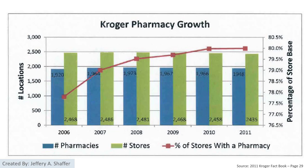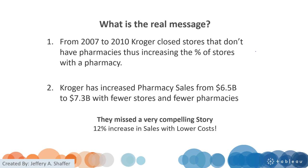So going back to our chart, we know that both stores and pharmacies are declining — but why is the percentage of pharmacies increasing? The answer is that they are closing stores without pharmacies. Kroger actually missed a very compelling message here: in the past few years, Kroger closed stores that do not have pharmacies, and they achieved almost a 12% increase in sales with fewer stores and fewer pharmacies — lower costs.